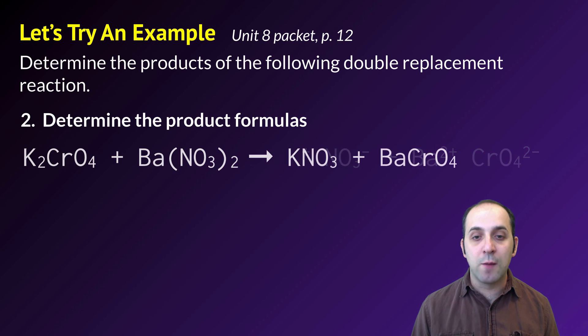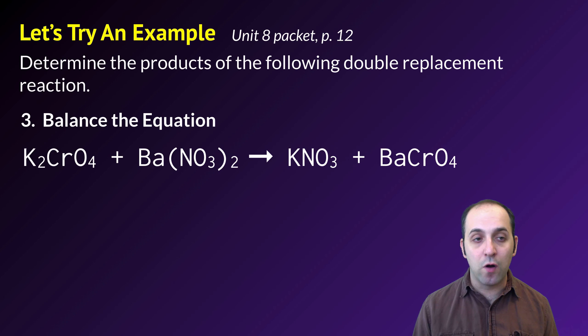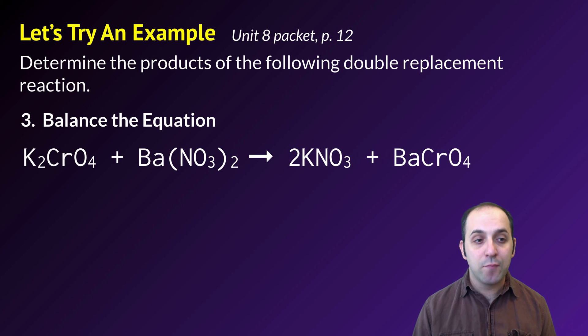Once I know that, I can figure out the formulas of the compounds. K⁺ and NO₃⁻ are going to combine in a 1-to-1 ratio, and Ba²⁺ and CrO₄²⁻ are also going to combine in a 1-to-1 ratio, which means that the formulas of my products are KNO₃ and BaCrO₄. Once I know that, I can just balance the equation. I've got two potassiums in my reactants. I've got one in my product, so I'm going to need to put a 2 in front of it. That gives me the two potassiums. It also gives me the two nitrates that I need. I do not need to put any number in front of barium chromate because all I need is one of each.